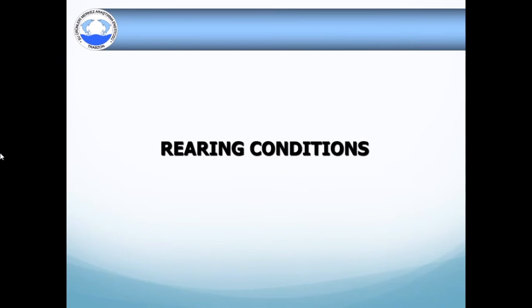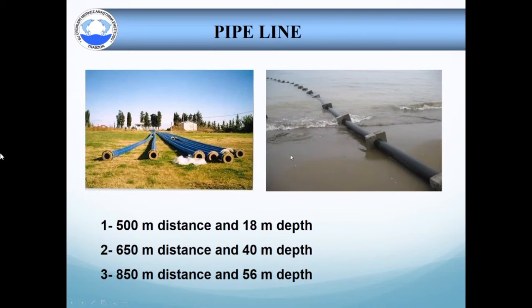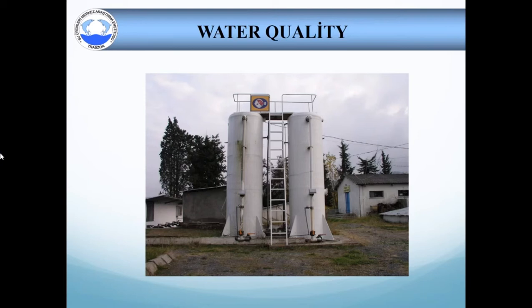We have seen the developmental stage of turbots. Now let's move to the next stage and learn about how to house them. I will be showing you how we are housing turbots at our institute. You may see different setups on different locations. This is very normal. After all, what matters is the production. We set up a pipeline to provide seawater at our institute. The pipeline is at three different distances: 500 meters, 650 meters and 850 meters away from the shore, and at three different depths: 18 meters, 40 meters and 56 meters.